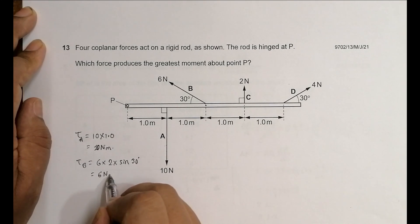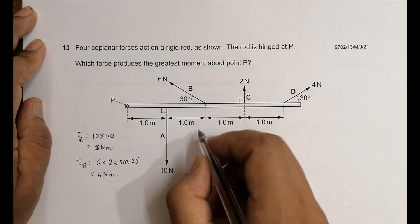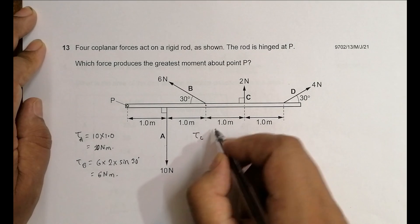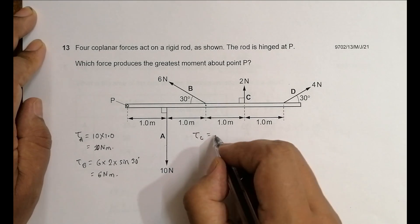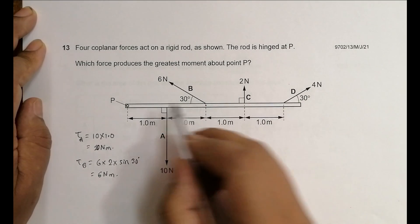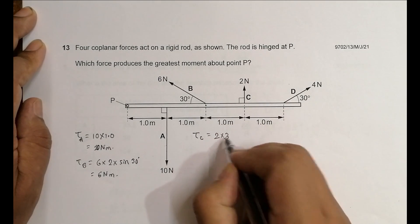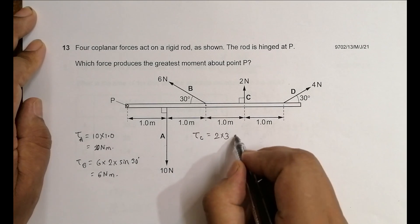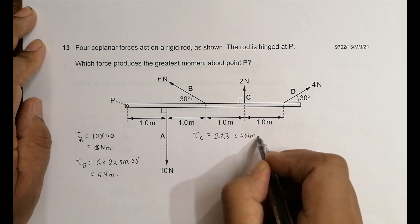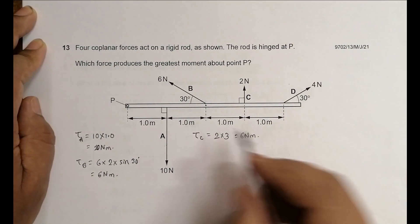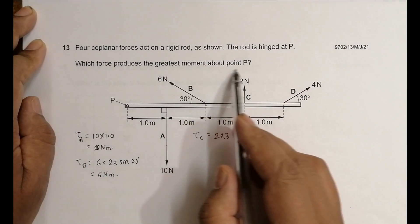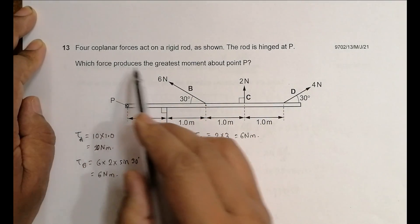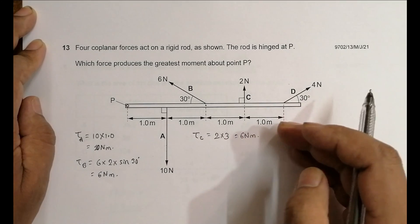Then comes tau C. Tau C equals the force, which is 2, into the distance: 1 plus 1 is 3. And this angle is 90. So it equals simply 6 newton meters. Since we are not concerned with the sense of moment, whether clockwise or anti-clockwise, we are not considering that.